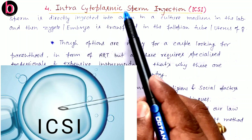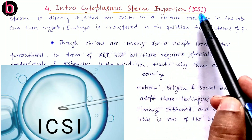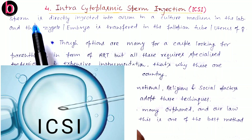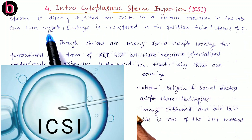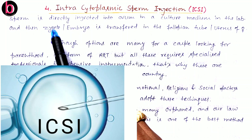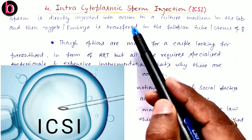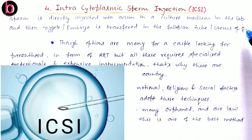The fourth method is Intracytoplasmic Sperm Injection or ICSI. In this technique, a single sperm is directly injected into the ovum in a culture medium in the laboratory, resulting in zygote formation. This zygote or embryo after cleavage is transferred into the fallopian tube or uterus of the respective female. ICSI is similar to IVF, but the key difference is that in ICSI a single sperm is directly inserted into the ovum, while in IVF a huge number of sperms are used for a single egg.